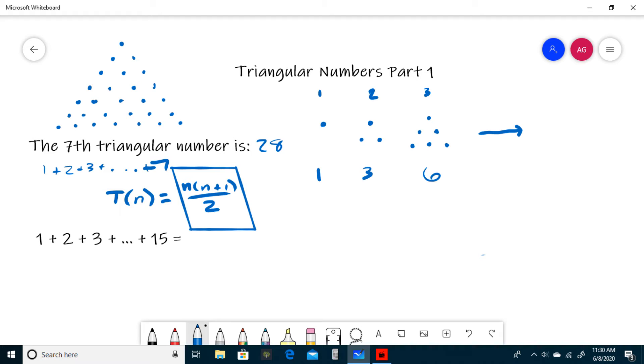Something you may have thought of in the first question is we can probably use this formula to find the sum of consecutive integers, and that's what our second example is. We have one plus two plus three all the way to fifteen. You can think about this as the number of dots in a triangle with a base of fifteen dots, because if we had one plus two plus three to seven, that's basically what we did for the seventh triangular number. So to find this sum, we can just plug it into this formula.